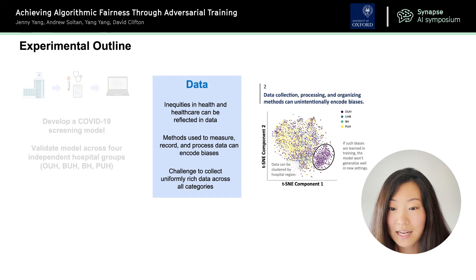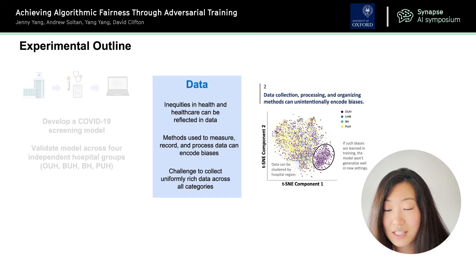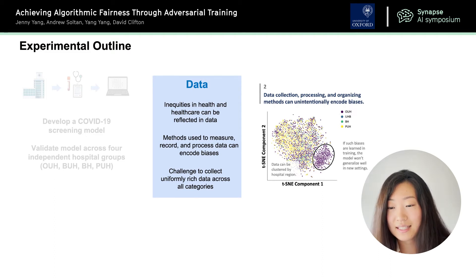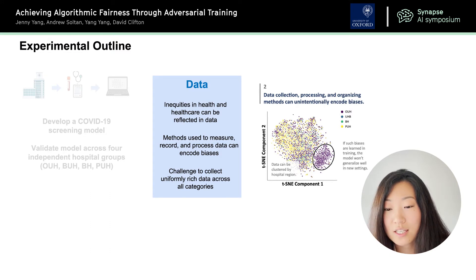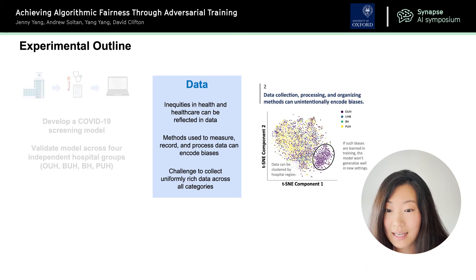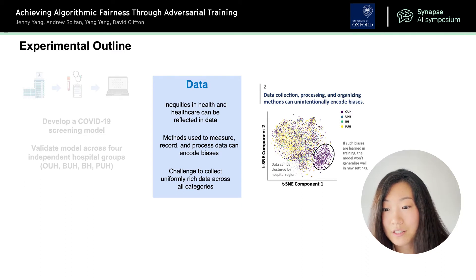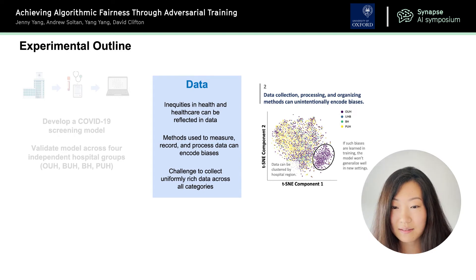Furthermore, when we use a data visualization technique called TISNI, we found that data collection, processing, and organization methods can unintentionally encode biases. For example, you can see that data can be clustered by hospital region, suggesting that confounders that are hospital-specific can actually bias the data. And if such biases are learned in training, the model won't generalize well when applied to new settings.